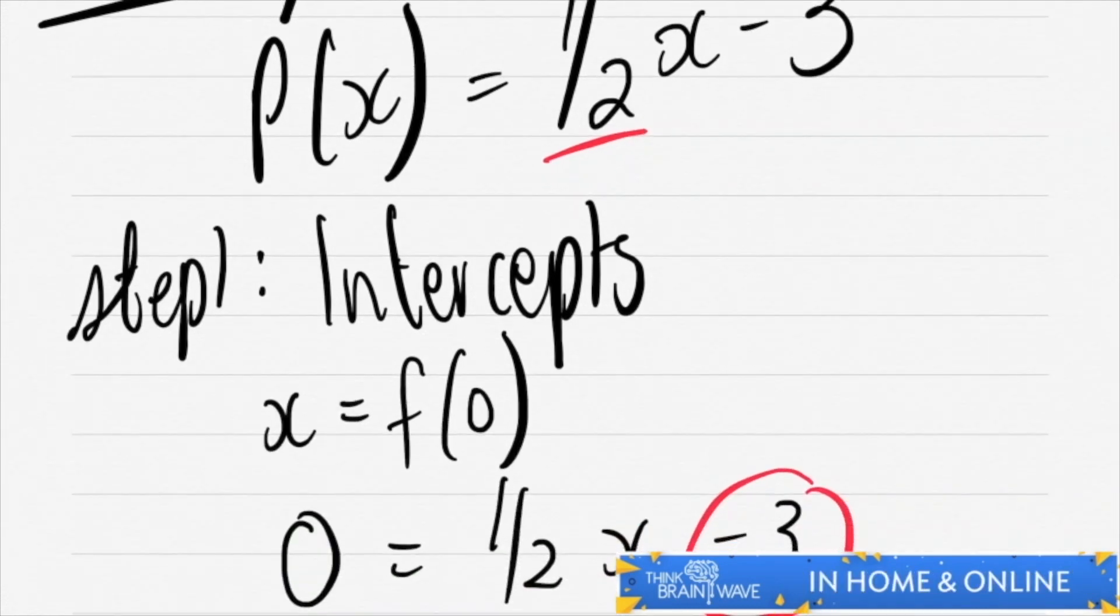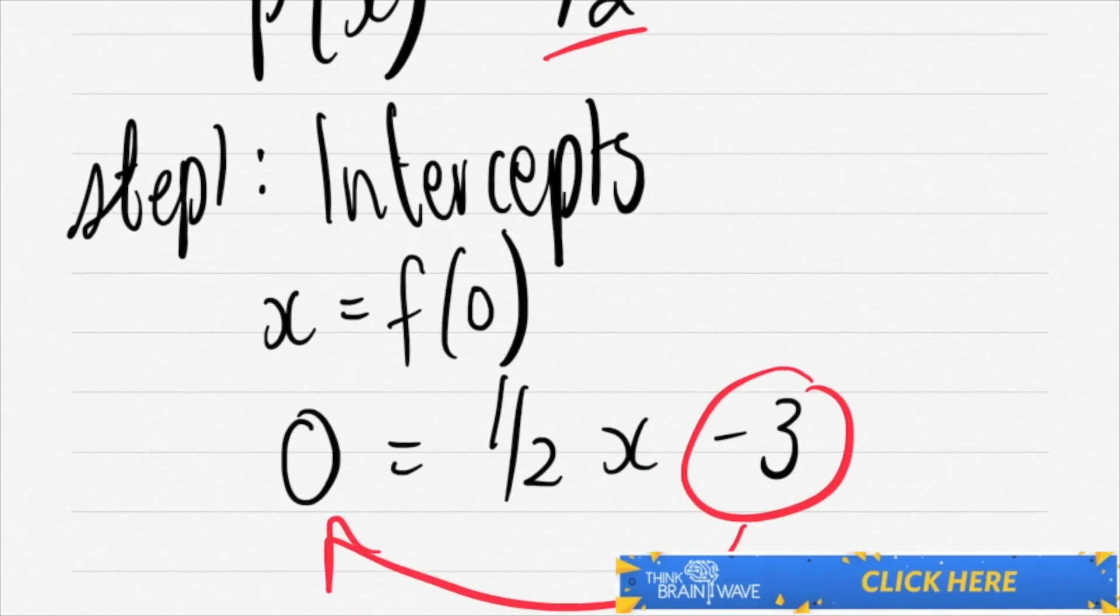You've got your intercepts here. You're doing your x-intercept, which means your y is equal to zero. Plug it in. This would actually be to calculate your x-intercept. So this should actually say f(x).